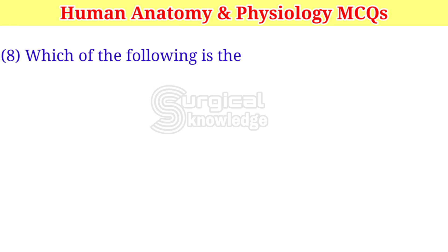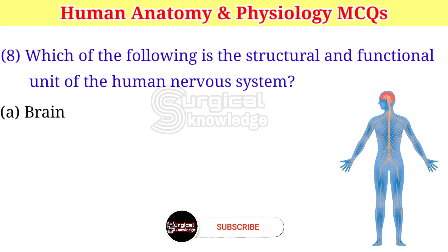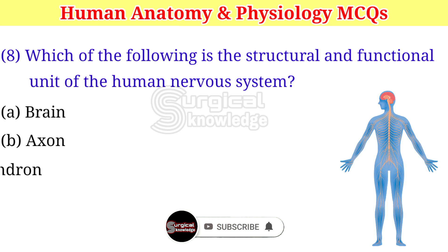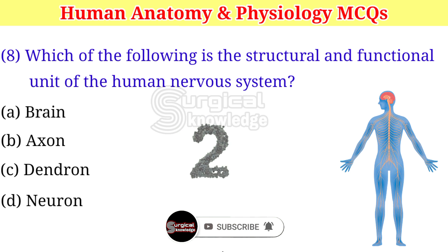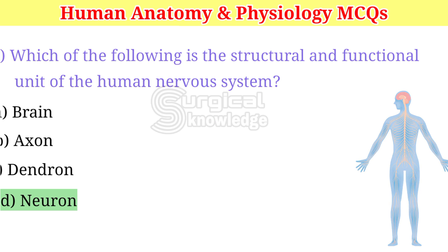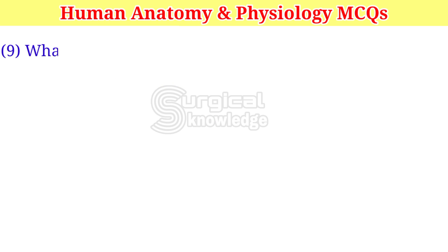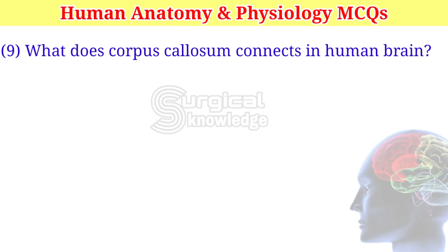Which of the following is the structural and functional unit of the human nervous system? A. Brain. B. Axon. C. Dendron. D. Neuron. Right answer is neuron.